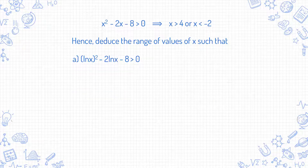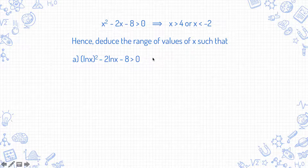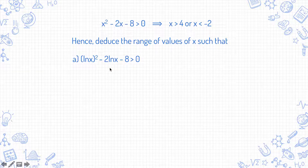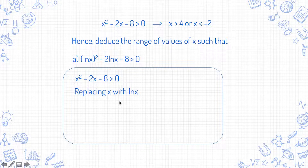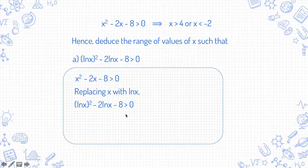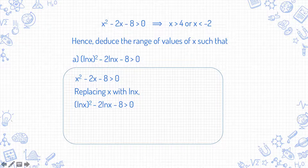Let's zoom in on example a. How are these two expressions related? From here to here, all you do is replace x with ln x. From x²-2x-8>0, replacing x with ln x gives (ln x)²-2ln x-8>0. Since the solution of the original is known, we replace x with ln x in the solution as well.